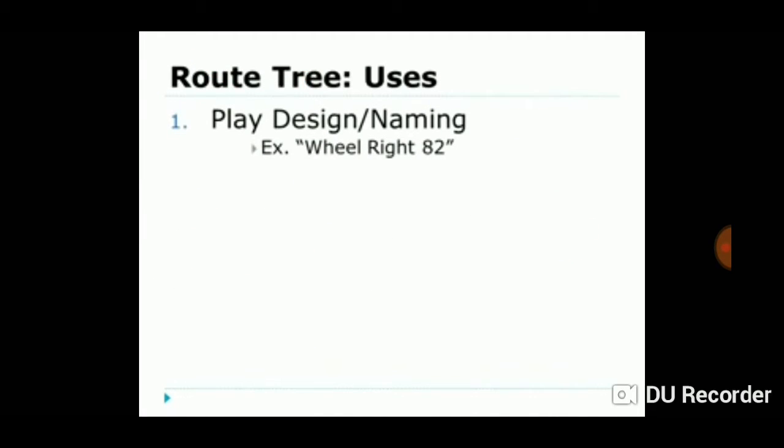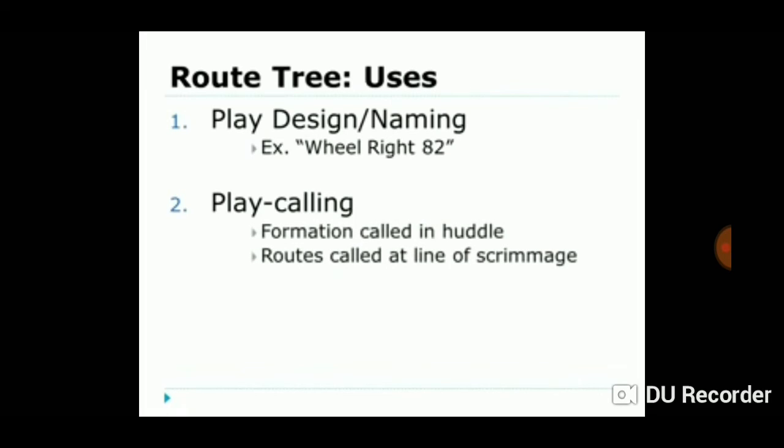Route trees can be used for play design and naming. Wheel right 82 is much faster than calling center wheel right slot post z slant. Another use is play calling during the game. Your offense could call the formation in the huddle and simply bark out numbered routes based on the defensive alignment.